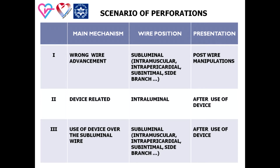The second scenario is perforation which appears after use of an intraluminal device. The important feature is proper intraluminal positioning of the guide wire at the moment of complication. The third scenario is perforation which appears after device use but is related to incorrect subluminal wire positioning, distinguished from the second scenario by the subluminal guide wire position at the moment of device-related perforation.